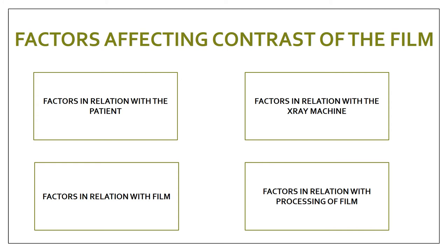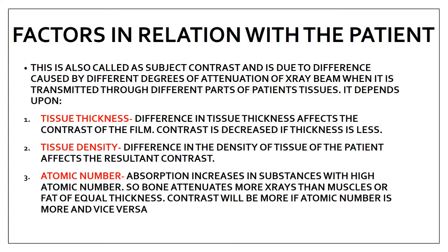Now, what are the factors affecting the contrast of the film? There are four factors: factors in relation with the patient, factors in relation with the x-ray machine, factors in relation with the film, and factors in relation with the processing of the film. Starting with factors in relation with the patient — the patient is known as subject, so it is called subject contrast. This is due to the difference caused by the different degree of attenuation of the x-ray beam when it is transmitted through different parts of the patient's tissue.